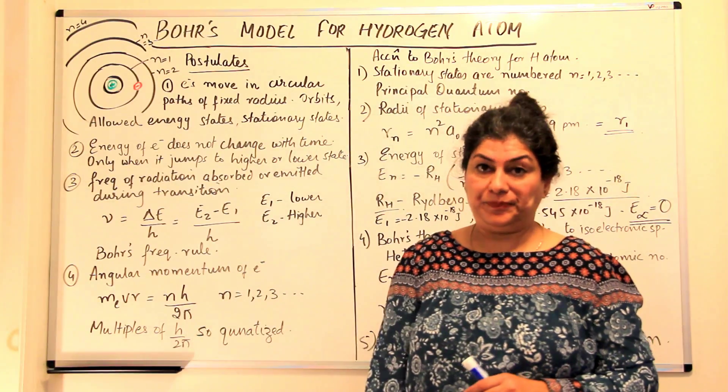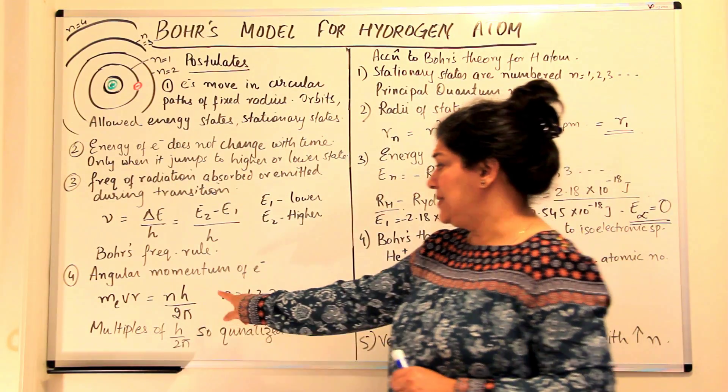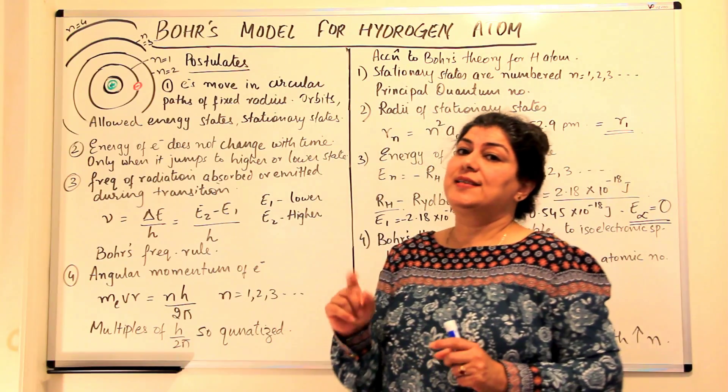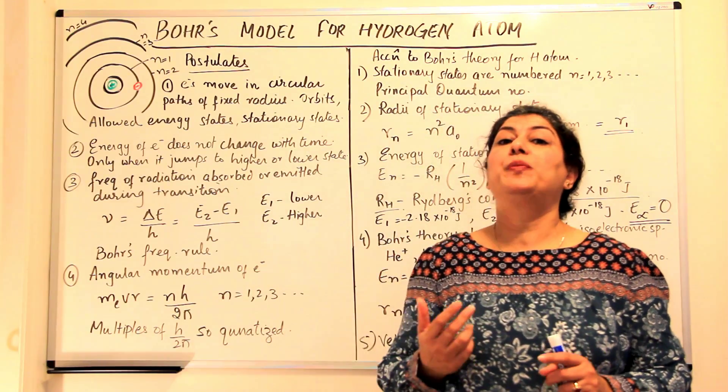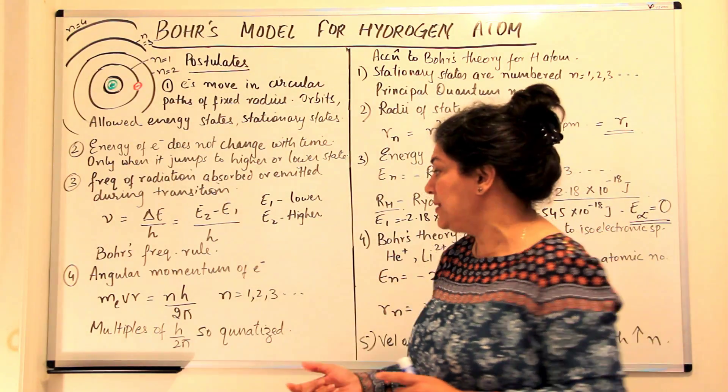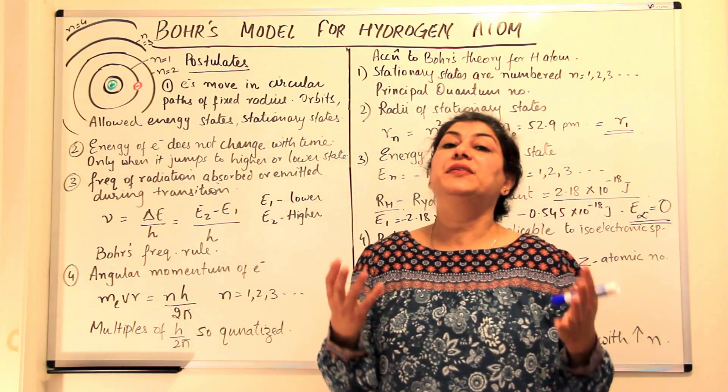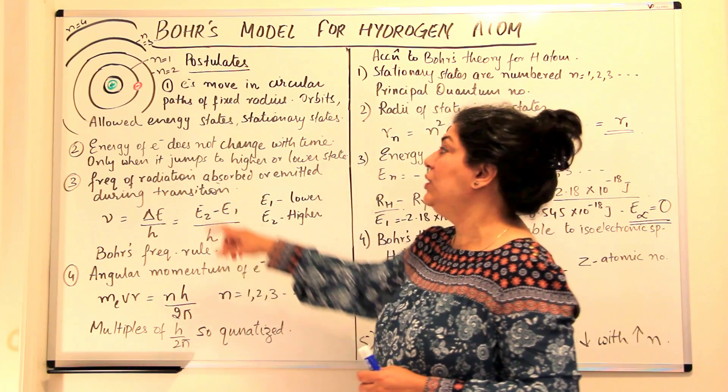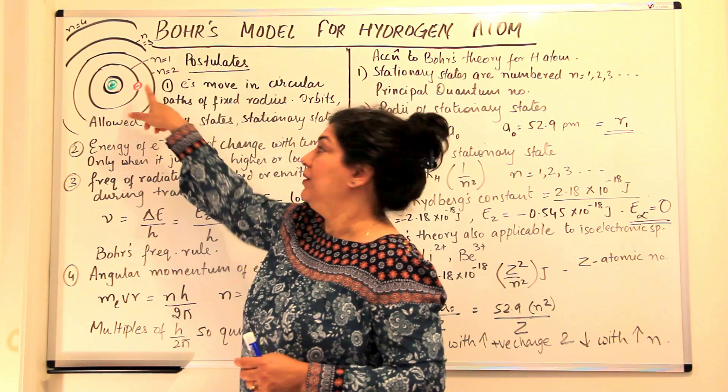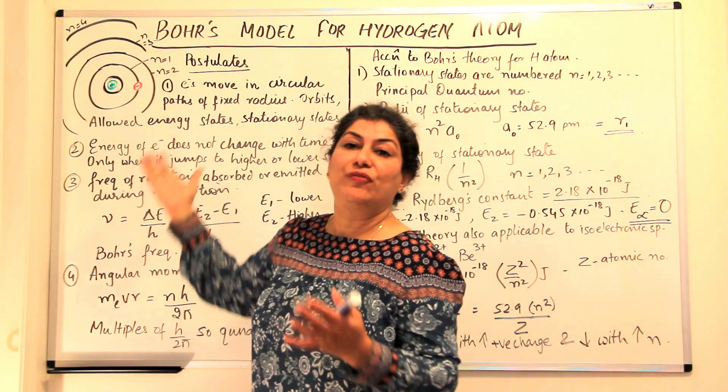And this was calculated to be equal to an integral multiple of H over 2 pi, where H we know is the Planck's constant which is 6.626 into 10 to the power minus 34 joules second, divided by 2 pi and n is an integral value, where n is the energy level, the first level, second level, third level of energy.